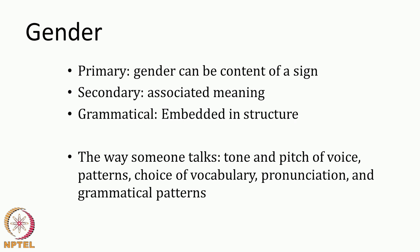Gender can be the content of a sign, it can be associated with meaning, and it is embedded in a structure. When language shows the embedding of gender in a structure, it is called grammatical gender — that is, it gets reflected in agreement patterns, one of the functional properties of language which is at times not so visible. Gender also gets reflected in various ways when people talk: the tone, pitch, patterns, choice of vocabulary, pronunciation and grammatical patterns reflect gender as well.